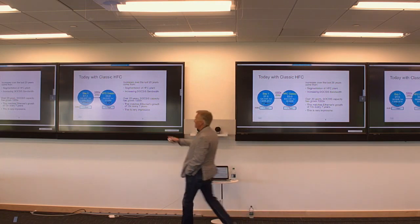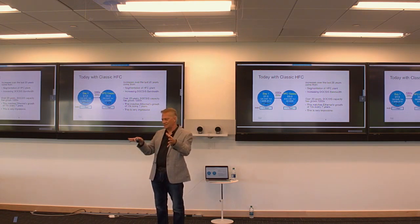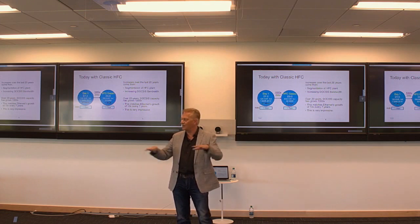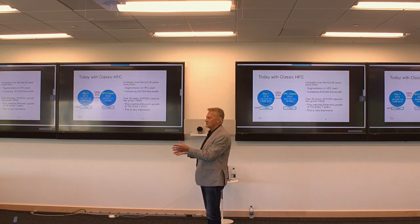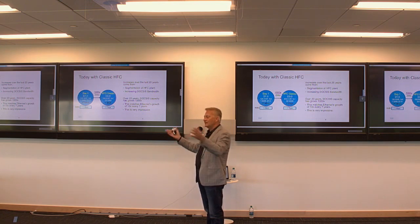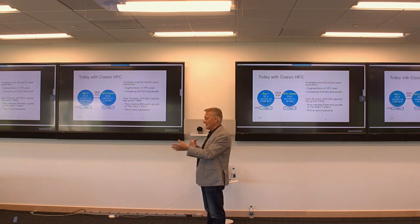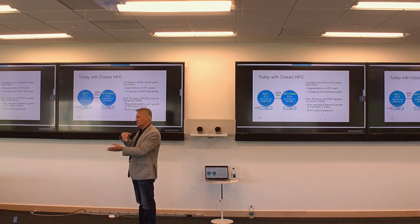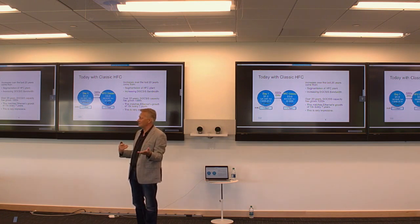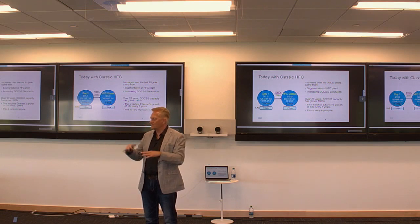There are two ways to get increased capacity: make things run faster and have more of them. Cable operators have a clever scheme where they build the plant, connect everybody up, and then see who's using it. In areas with lots of usage — like near colleges — they start splitting the plant. Instead of 500 households passed, you get two groups of 250. The moment you cut the plant in half, you get twice the capacity. You can keep cutting. This is great economically because they spend money on the plant where it generates revenue. Compare that to fiber-to-the-home or DSL people who have to spend everywhere regardless of penetration — cable guys have a really good economic model.